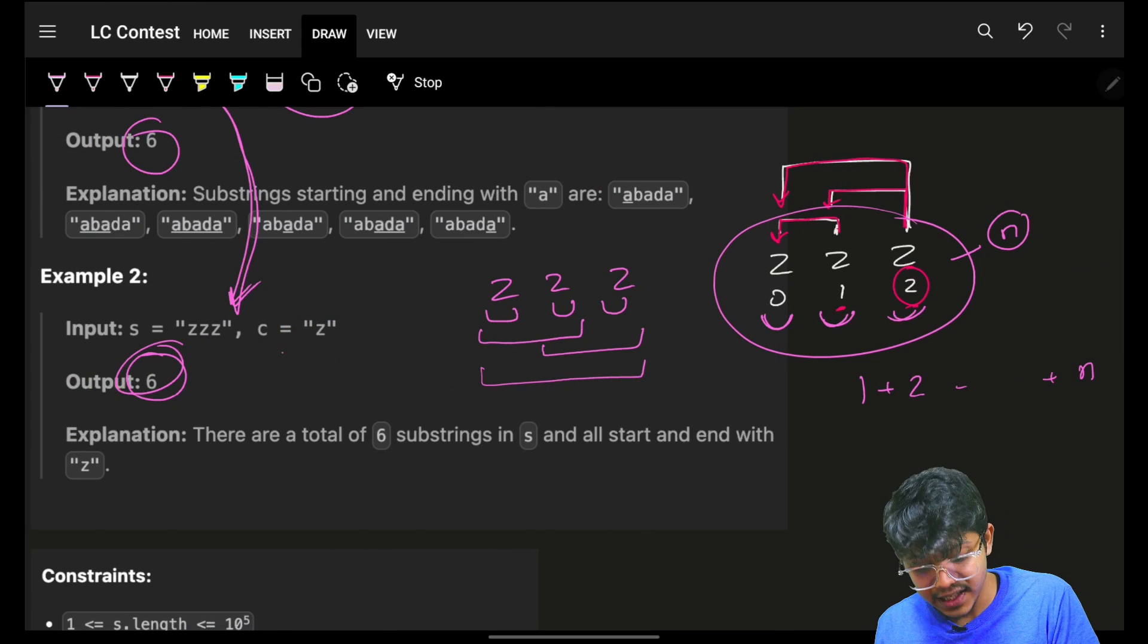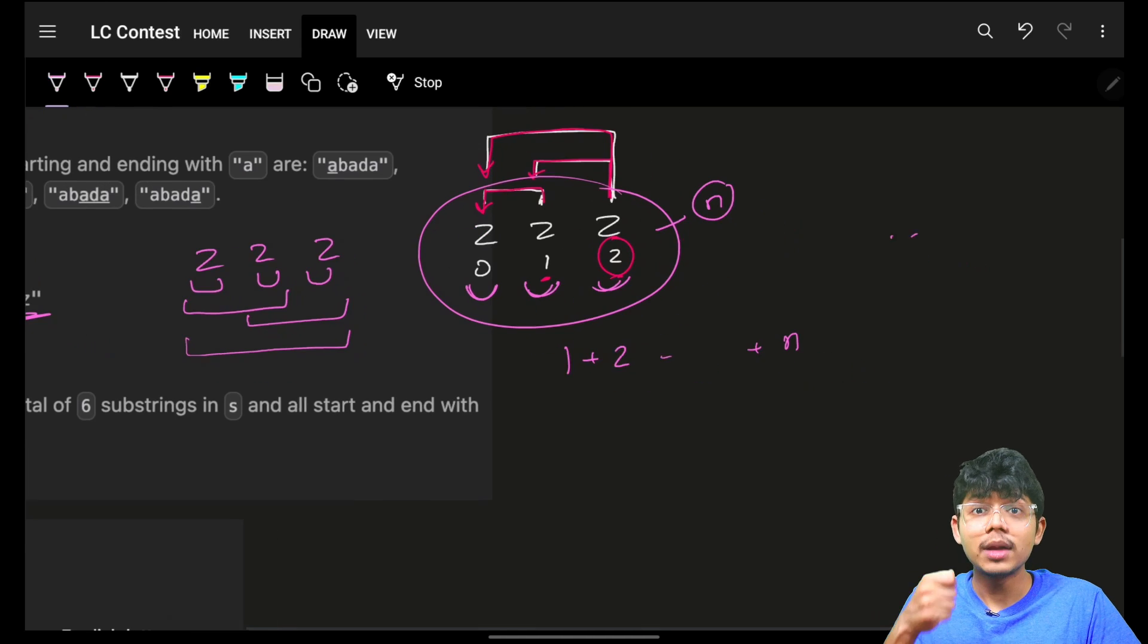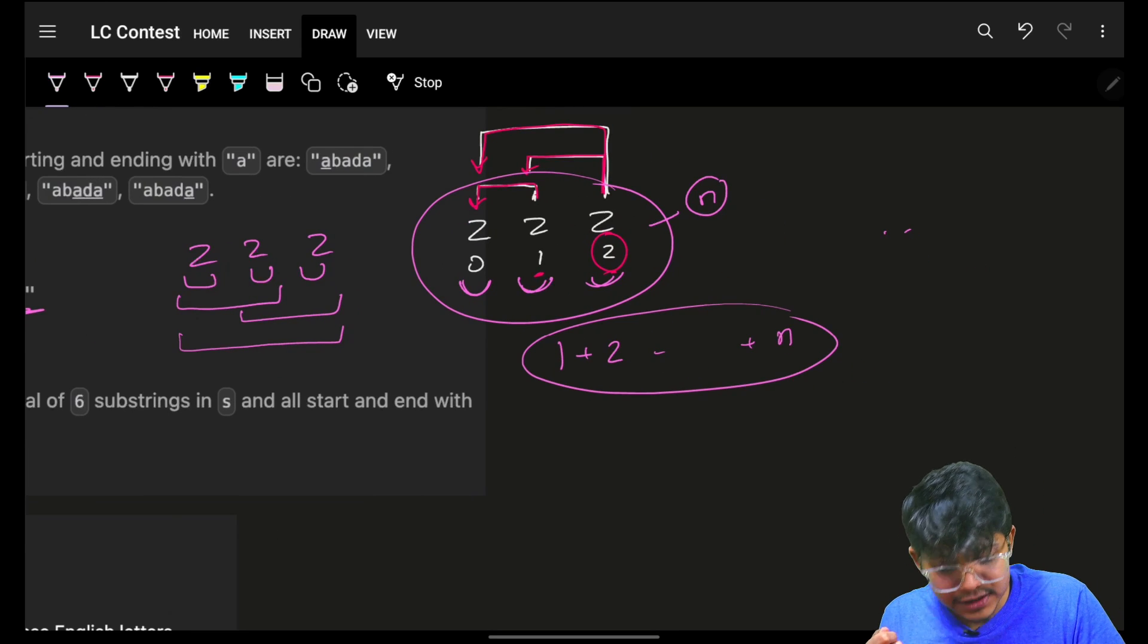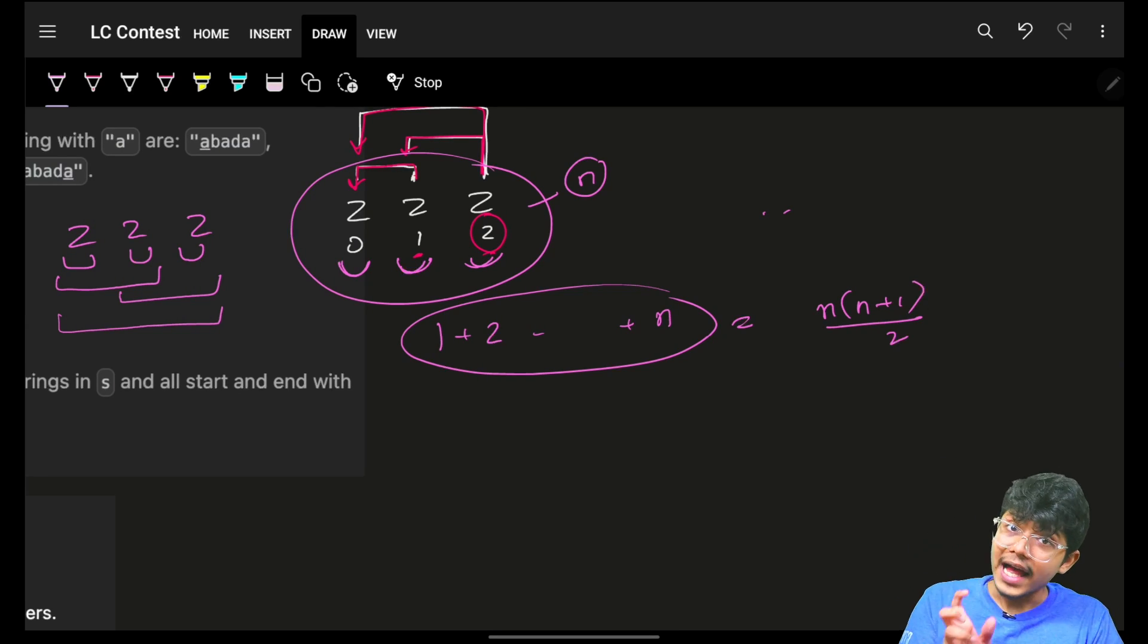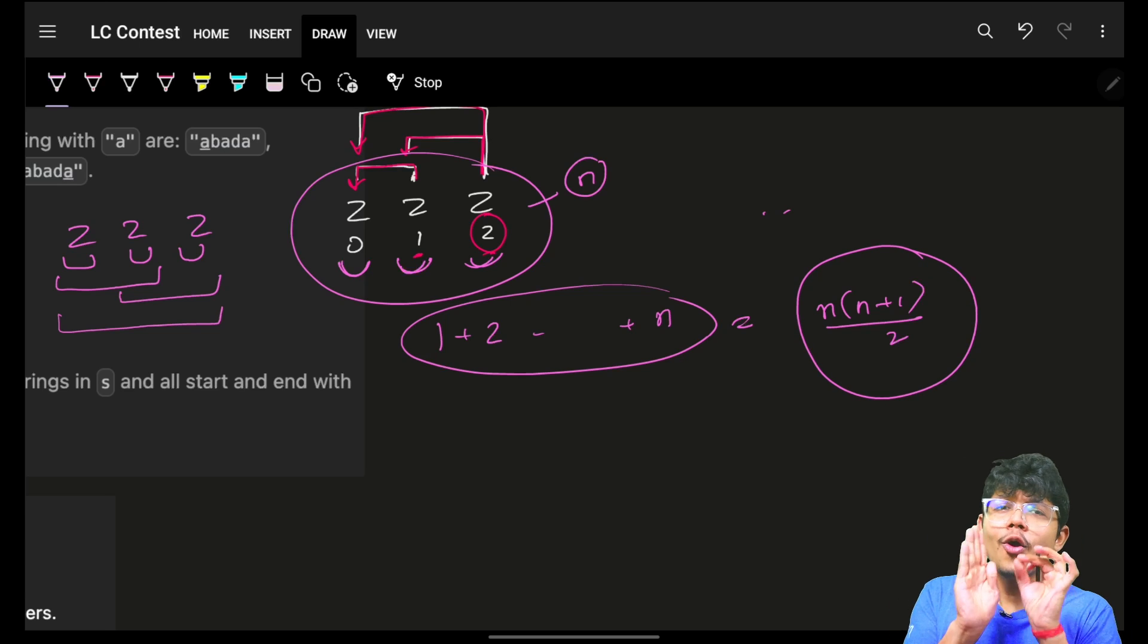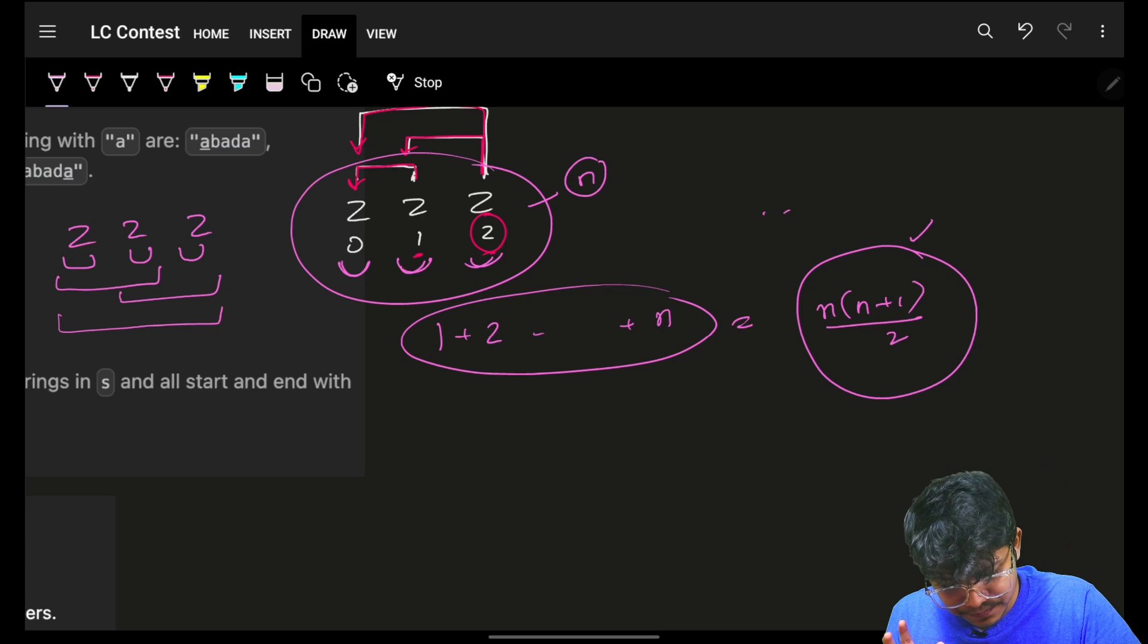This is the standard sum which we have seen in maths. It sums up to n into n plus one by two. n into n plus one by two. And that's how it's a simple O of one operation in which you can simply give n into n plus one by two.